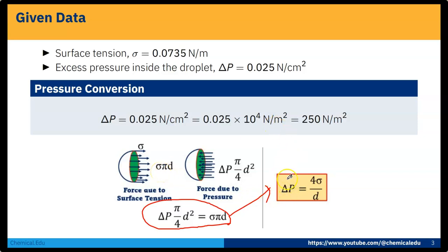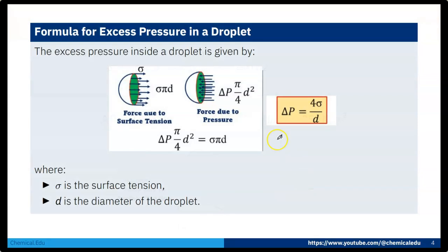Now we have del P, we know sigma, we can easily calculate D. D is the diameter of the bubble. Sigma is the surface tension, D is the diameter of the droplet. So we have this formula: del P equals 4 sigma by D.